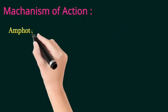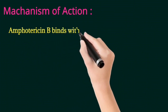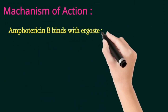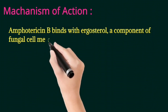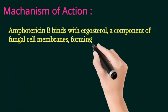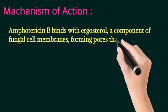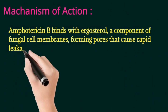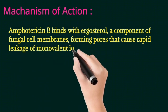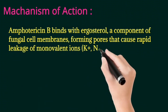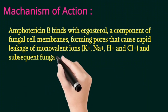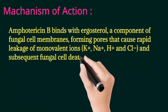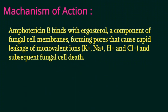Its mechanism of action is: Amphotericin B binds with ergosterol, a component of fungal cell membranes, forming pores that cause rapid leakage of monovalent ions like potassium, sodium, hydrogen, and chlorine, and subsequent fungal cell death.